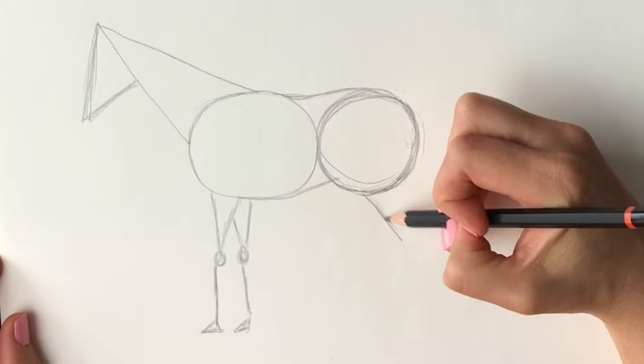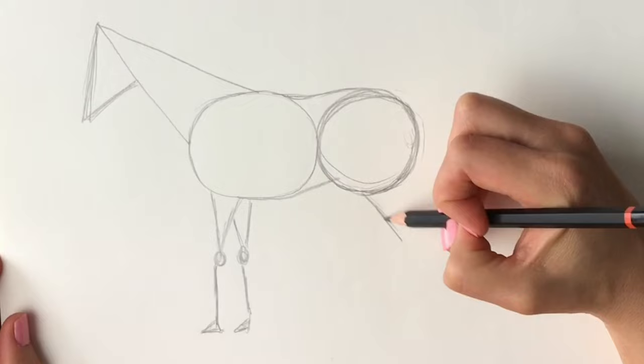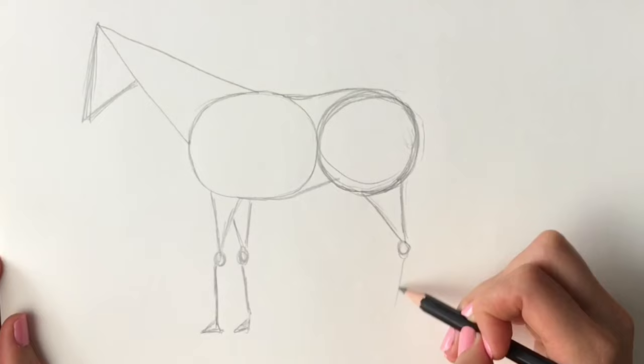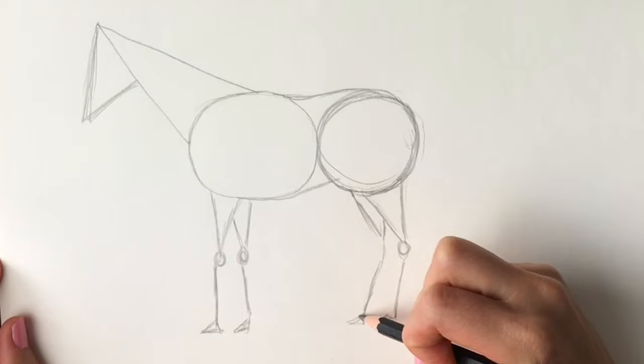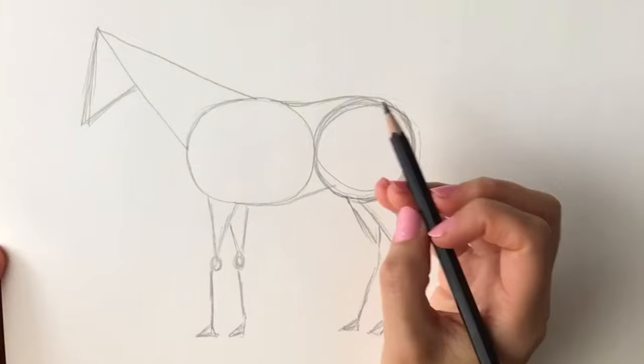Now here we're going to do the back legs, coming round, do the hock there, come round and the heel and the hoof just like that, and again, just like so. And there we have the basic shape of the horse.